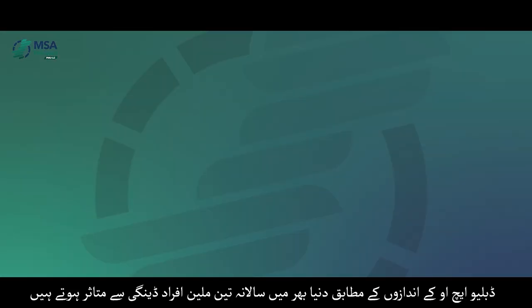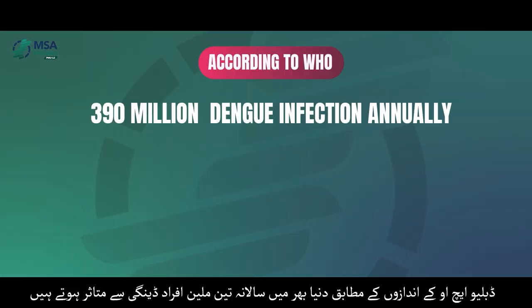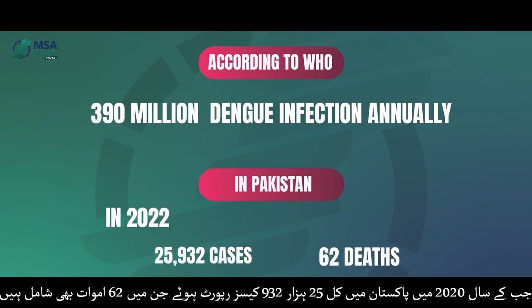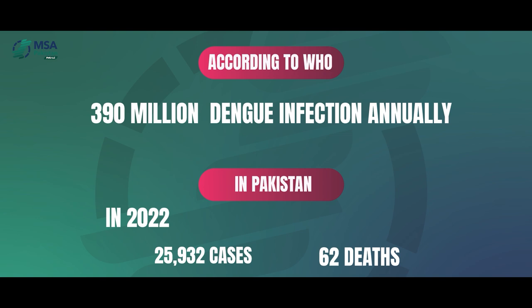WHO estimates around 390 million dengue infections per year around the globe. In 2022, a total of 25,932 cases, including 62 deaths, were reported in Pakistan.